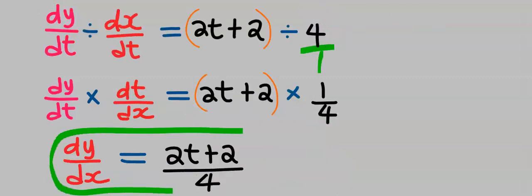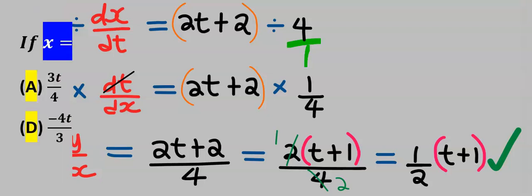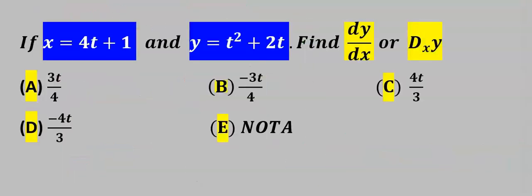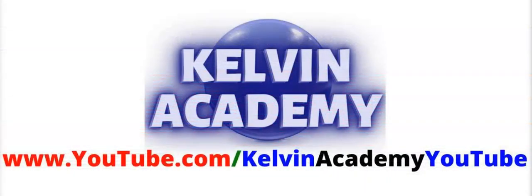This is now our dy/dx. The dt cancels dt. Simplifying: the 2 in the numerator and the 4 in the denominator simplify so we get (t + 1)/2. This is our dy/dx. From the options our answer is none of the above, because our dy/dx is (t + 1)/2.